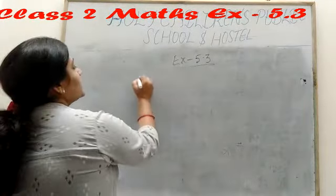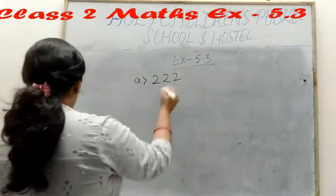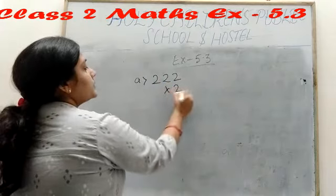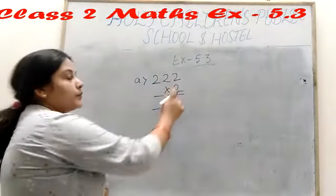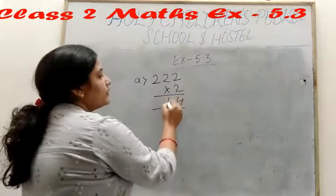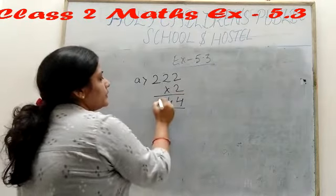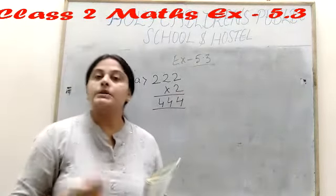Here, question number E is 222 into 2 is equal to what? So we can calculate 2 to the 4. Again, 2 to the 4 and 2 into 2 is equal to 4. When we multiply 222 into 2, our result we get 444.